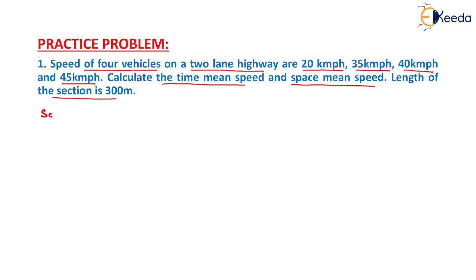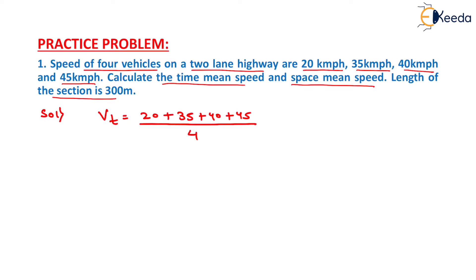First, we have to calculate the time mean speed, which is given as Vt. It will be the sum of all the speeds — that is 20 plus 35 plus 40 plus 45 — divided by the number of speeds, that is 4. On solving, 20 plus 35 plus 40 plus 45 divided by 4 equals 35 km per hour. That will be the time mean speed.